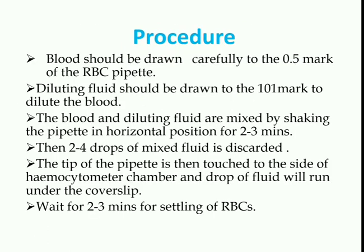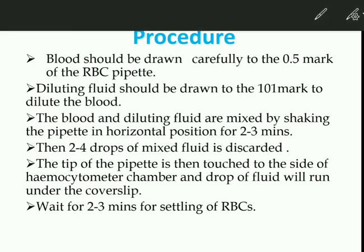For RBC counting, the blood should be drawn carefully to the 0.5 mark on the RBC pipette. If using capillary blood, the site of prick should be cleaned with spirit and cotton and let it dry. Make a deep prick on the ring finger. Then the diluting fluid should be drawn up to the mark 101.